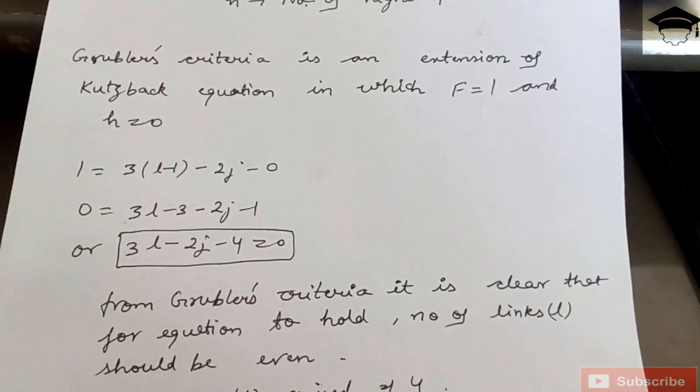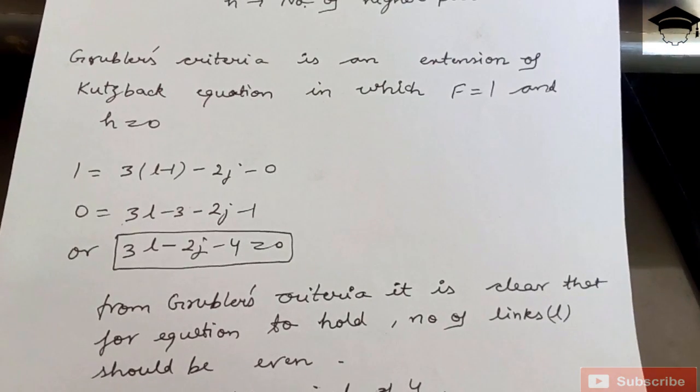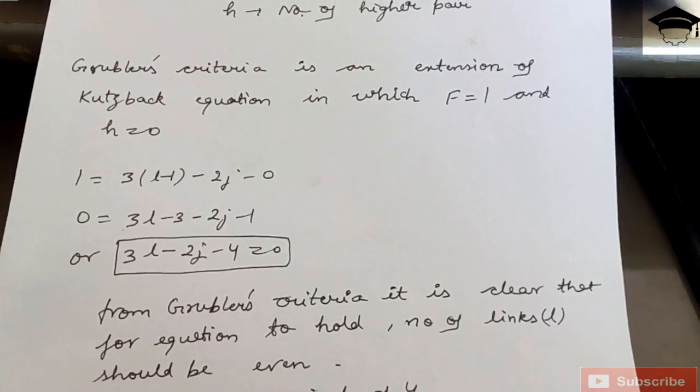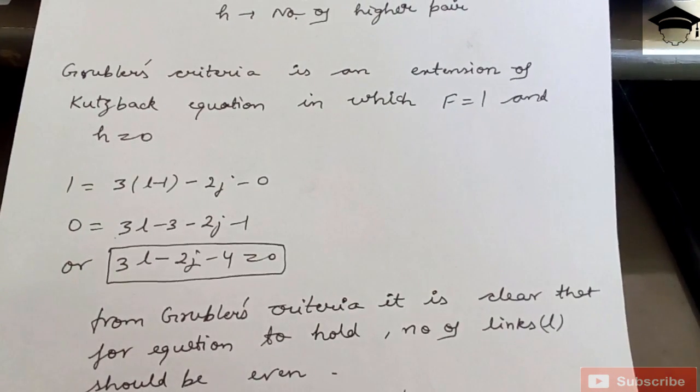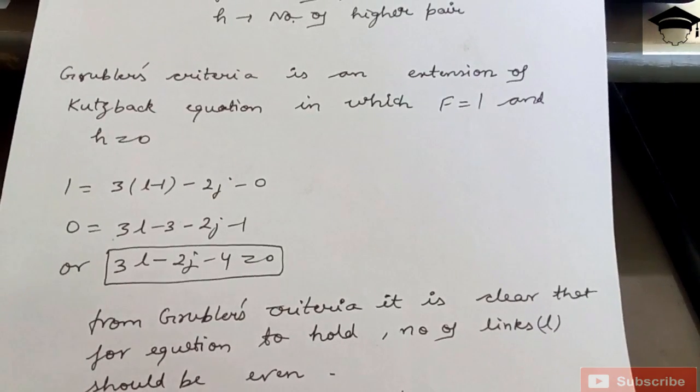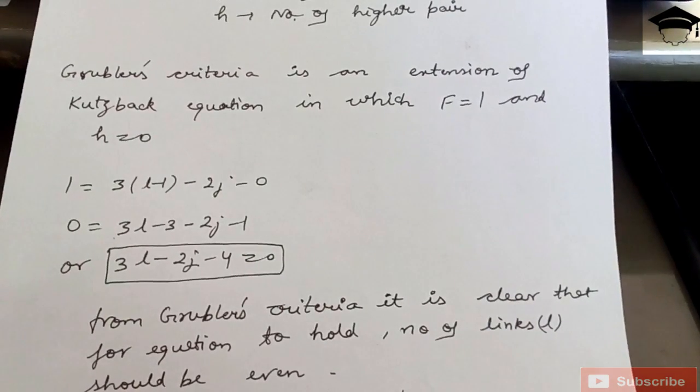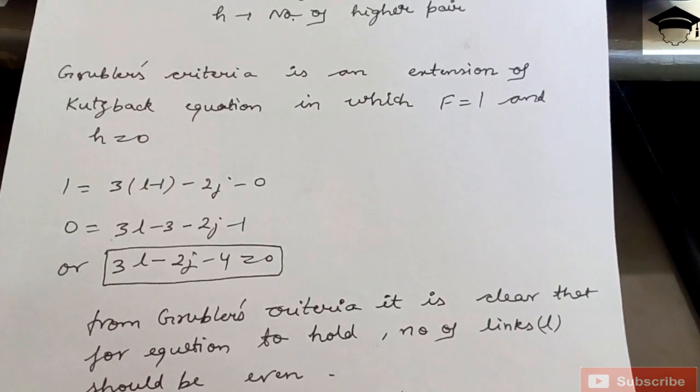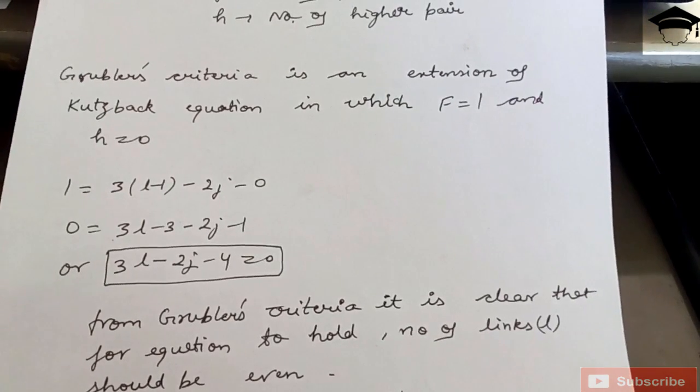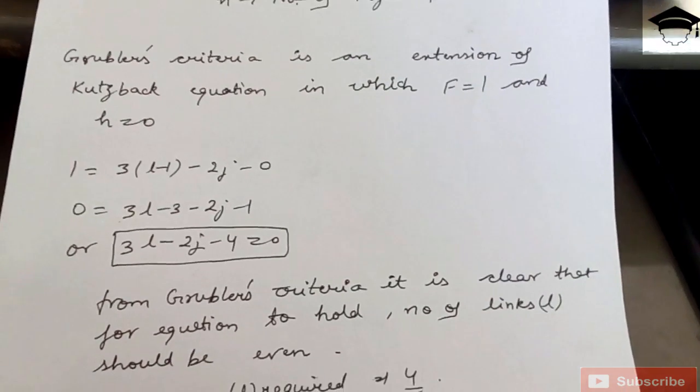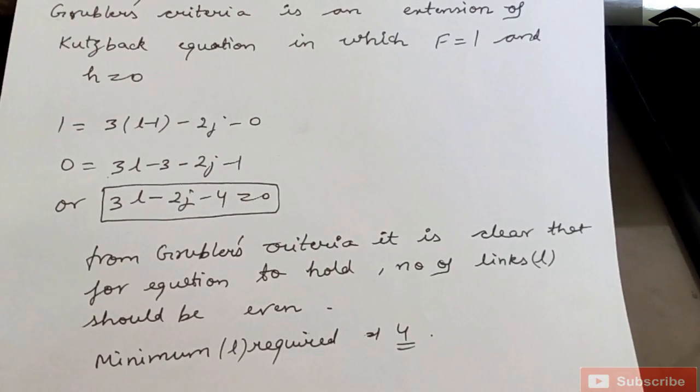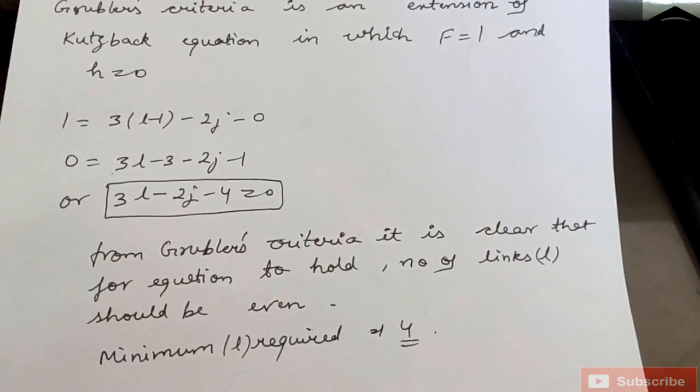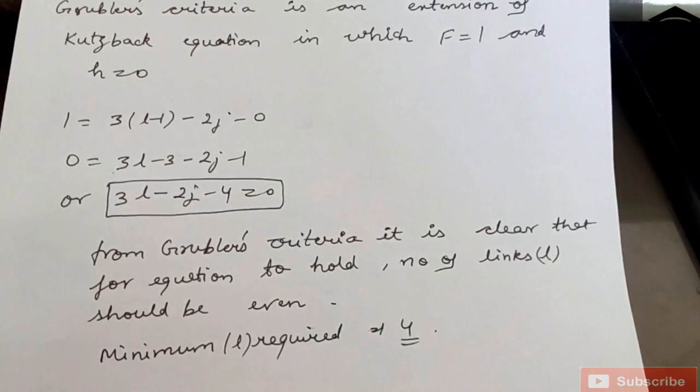I hope I am clear. So number of links L would be even, not odd. So minimum can be two, but with two links you cannot form a chain, so the minimum requirement of L, that is number of links, will be four. This is many time asked in objective questions. Or you can use this equation, three L minus two j minus four equal to zero, so you can remember that or you can use the Kurtzbach equation and put degree of freedom equal to one and h equal to zero and you can get this equation. Also one objective question comes that minimum number of links required, that would be four.